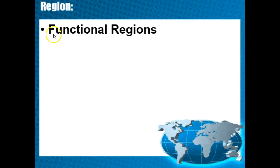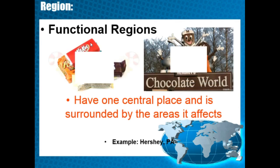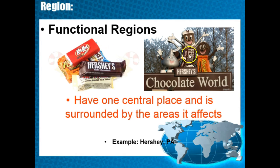The next type is functional region. Just like the word 'function,' it means working together — one central place surrounded by the area it affects. For example, the Verizon data network uses cellular towers that transmit connectivity across the country, forming a web-like functional region. Another example is the Hershey Company, which has its central location in Pennsylvania, but their chocolates and candies go everywhere — even the Circle K by your house. The areas connected to that distribution make up a functional region.